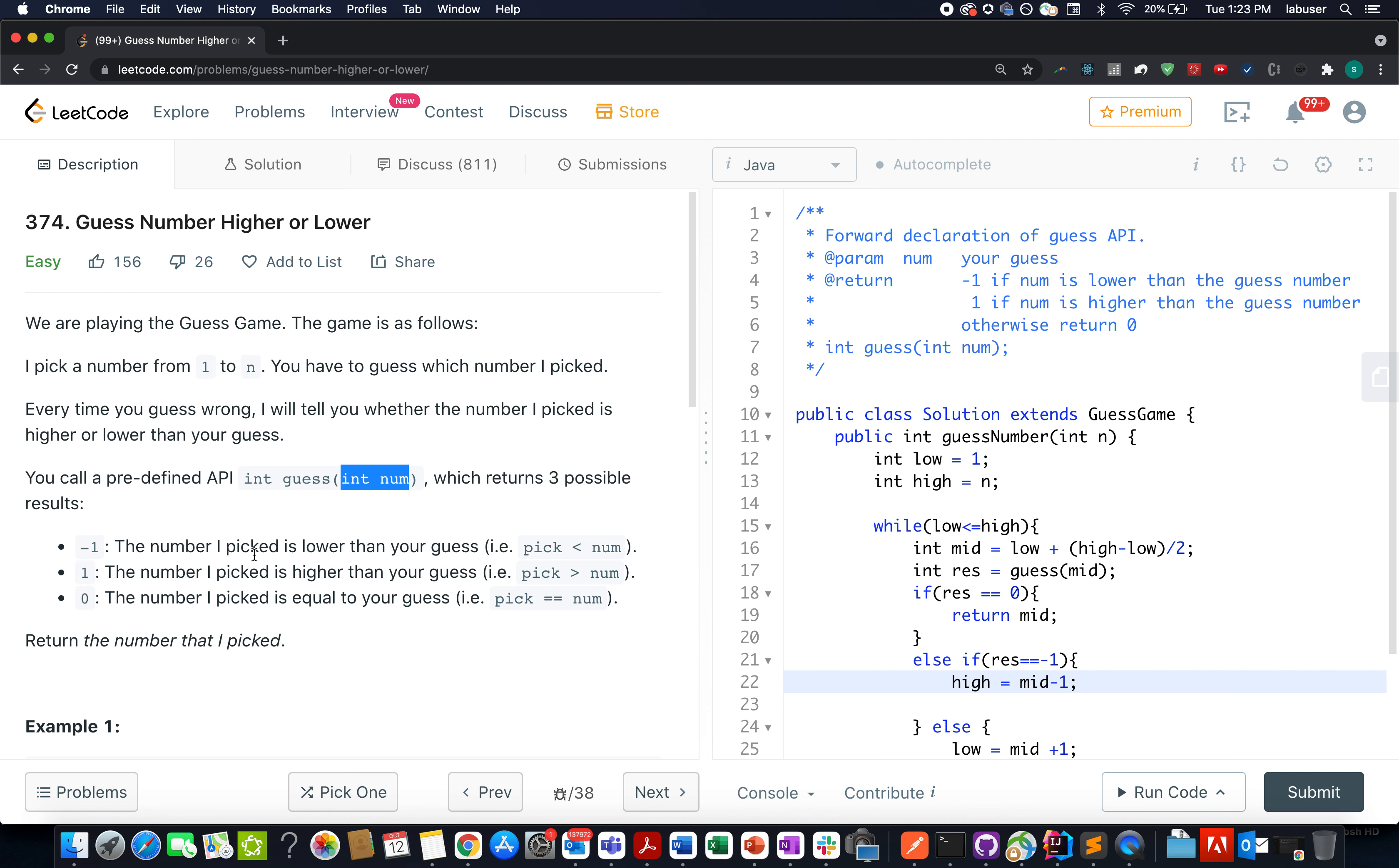If the number that I picked is lower than the guess, then this API will return minus one. If it is higher than your guess, then it will return one. If it is equal to your guess, then it will return zero. We need to return the number that has been picked.